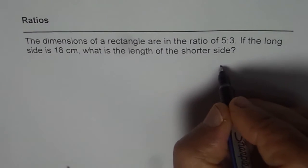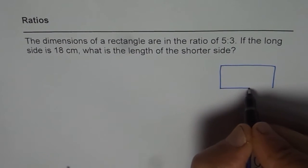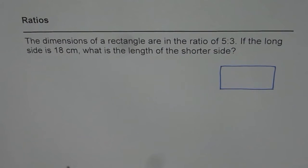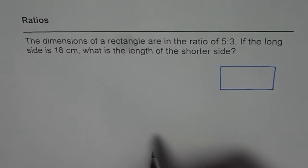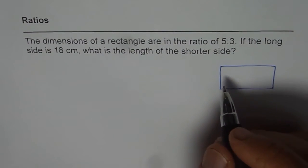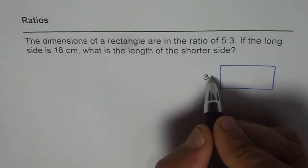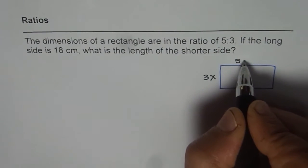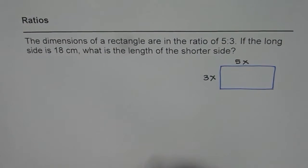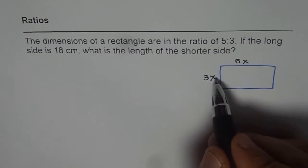So let's construct one rectangle here. And what we are saying is that the sides are in the ratio of 5 is to 3. So in that case, if I say one side is 3 times x, the other side should be 5 times x. That is what it means when I say that the two sides are in the ratio of 5 is to 3.